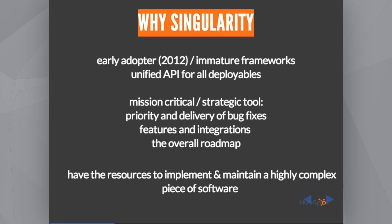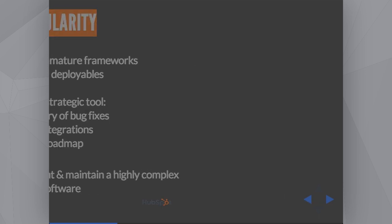Another reason we chose to implement our own framework is that we were very early adopters — we started in 2012. At that time, there was no mature framework. When we tried later to integrate existing frameworks, we found that the different abstractions they supported were creating much more complexity than we wanted, and we didn't get the use cases we needed. Having said so, it does require a considerable amount of resources to have your own framework and maintain it. However, at HubSpot we were lucky because at the same time we made this strategic decision, we also created the Platform team that now implements and supports Singularity.